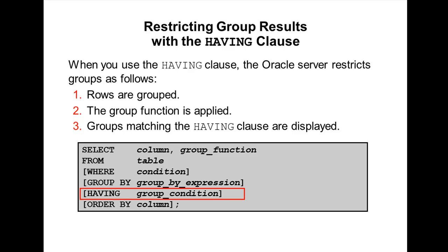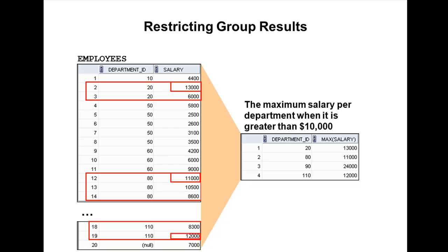We create groups using GROUP BY clause. For example, assume that you want to find the average salary for each department by grouping on department number. Each department forms one group, and you want to find the average salary for each department.